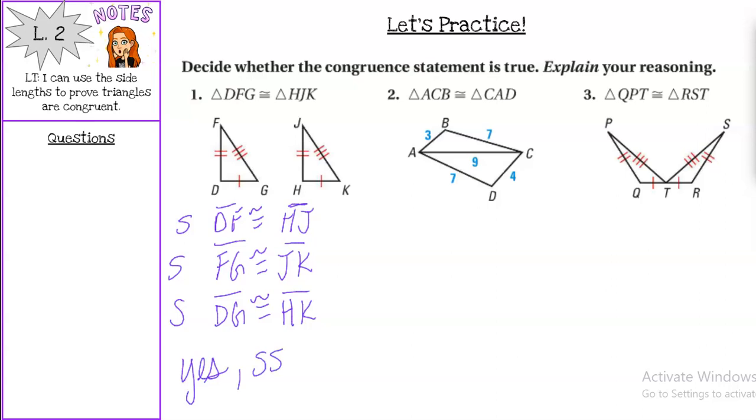We look at number two. We have triangle ACB is congruent to triangle CAD. Well, if I look they share side AC so both would be nine. AD is congruent to BC because they're both seven. But if I look at side AB and CD, AB is not congruent to CD.